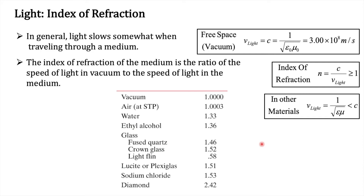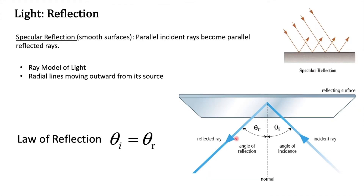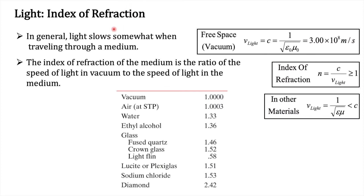Next is refraction. Before that, we need to understand what the index of refraction is. For a very good reflecting surface, the incident ray almost reflects all of it. However, depending on the material, some of the incident ray can be absorbed by the material itself, and some gets transmitted through. During that transmission process within the thickness of the material, the light ray gets refracted within the material. We're trying to understand what that refraction is, so let's first look at the index of refraction.